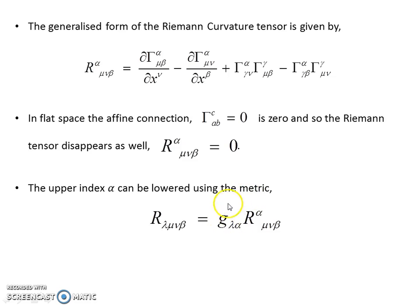Just as a reminder, the role the metric plays, this upper index can be lowered using the metric. And then you still have the Riemann tensor with all indices lowered.